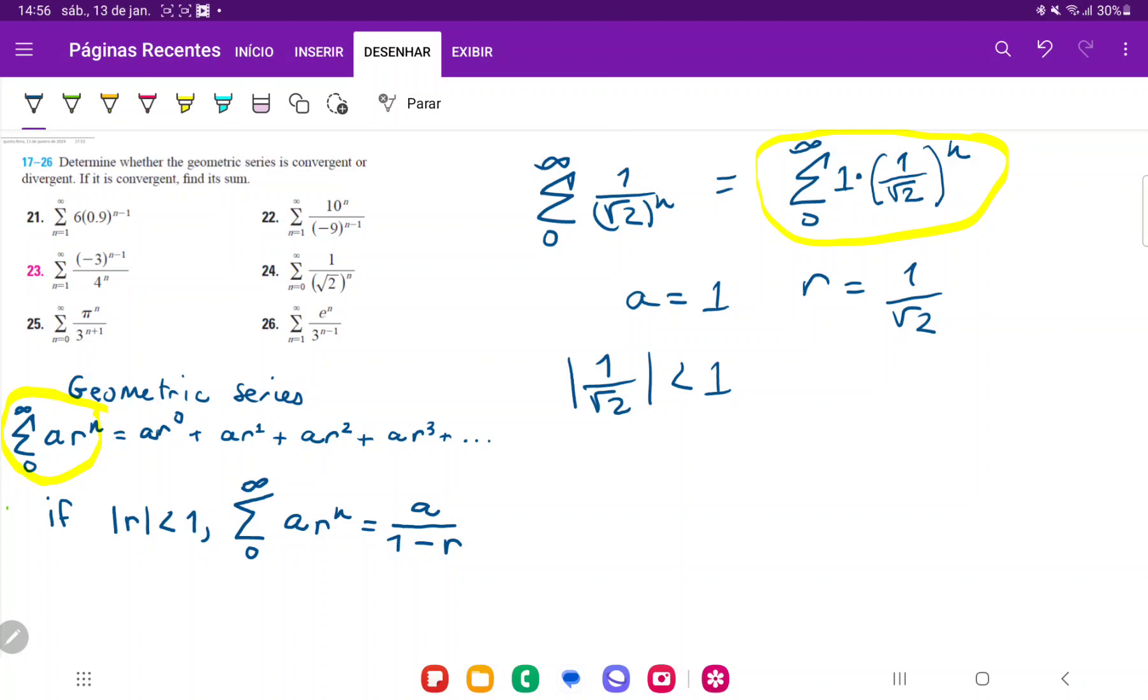So this is convergent. So it converges. And because it converges, now we can find the sum.